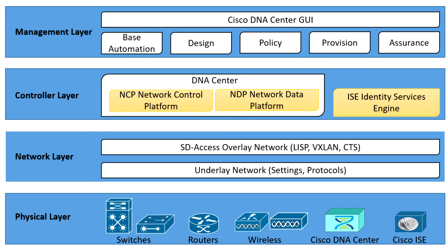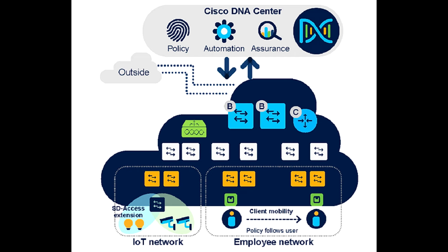Cisco SD-Access consists of three core components that work together to deliver network assurance, automation, and security. The first component is Cisco DNA Center, a central component for implementing SD-Access. It is the network management and automation platform that serves as the brain behind SD-Access — an intuitive, centralized management system that enables network engineers to apply policies across the SD-Access network. It centrally manages the design, policy, provision, and assurance workflows.